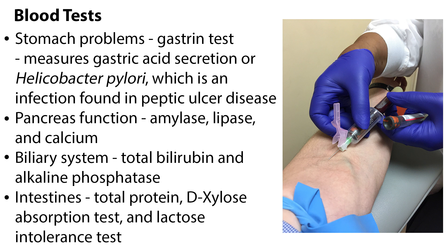A blood test to evaluate stomach problems is the gastrin test. This test measures gastric acid secretion or Helicobacter pylori, which is an infection found in peptic ulcer disease. Blood tests for amylase, lipase, and calcium evaluate pancreas function.